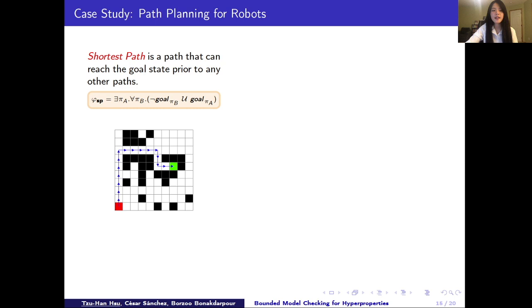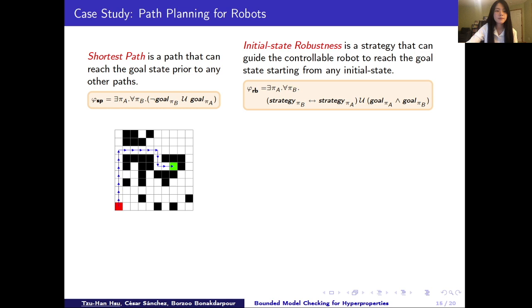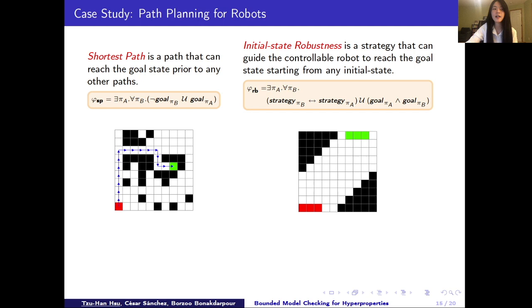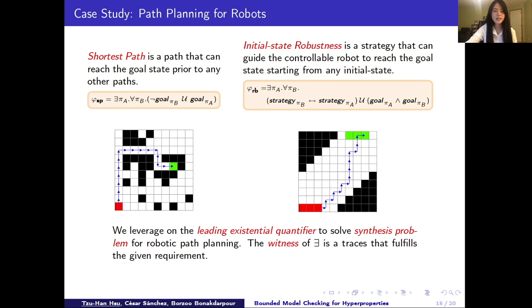And another case for robotic planning is the initial state robustness problem, which we can be captured using this hyperLTL formula as well. And on a map like this, this blue path is a robust path that we can guide any controllable robot from any arbitrary initial state to reach the goal position by following this strategy. So this path planning case in general shows another possible applications we can do by being able to solve hyper properties since a witness is a trace that actually satisfies the hyperLTL itself. So we can use this fact to solve synthesis problem.